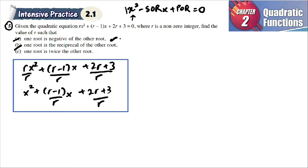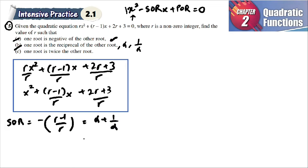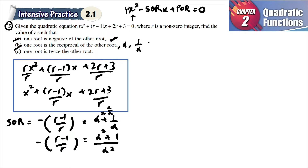For part (b), one root is the reciprocal of the other. If one root is alpha, the other is 1/alpha. The product of roots equals (2r+3)/r, and alpha times 1/alpha equals 1. So we can directly use the product of roots to find r.